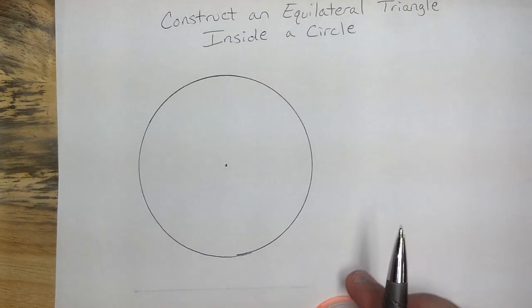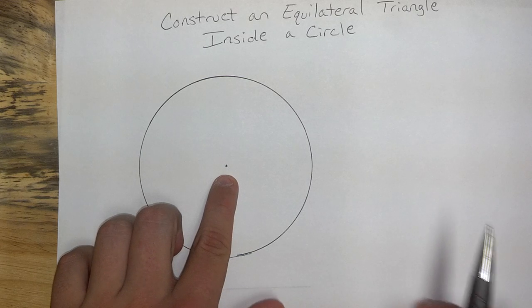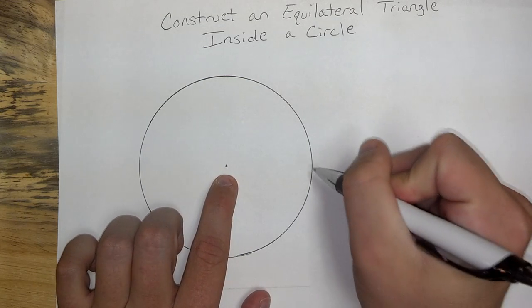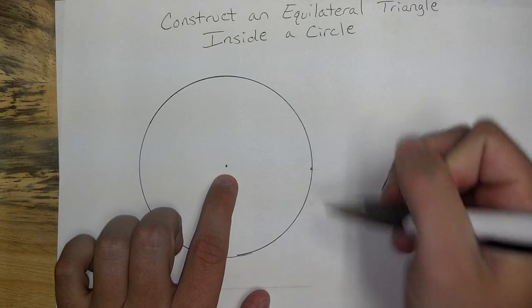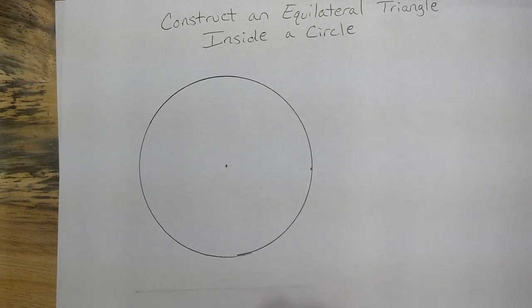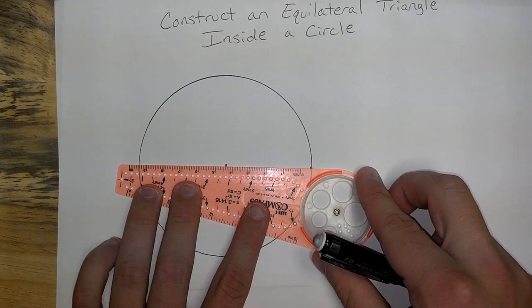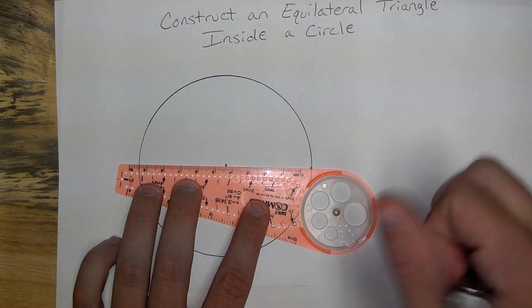Alright, there's my circle. Now, since I have a center here, go ahead and come out, give yourself an end point, and create a nice diameter that goes through here. Lightly in pencil is probably best.